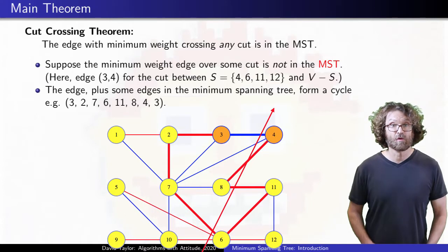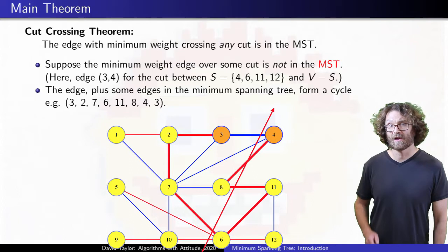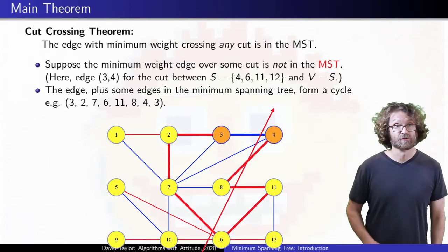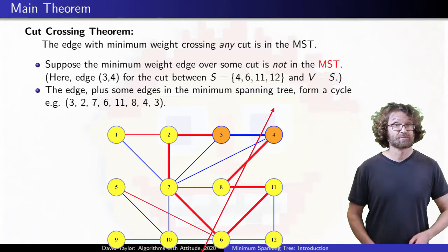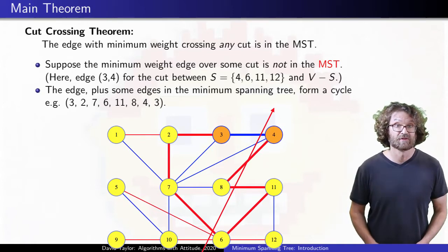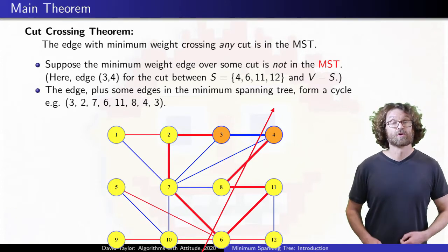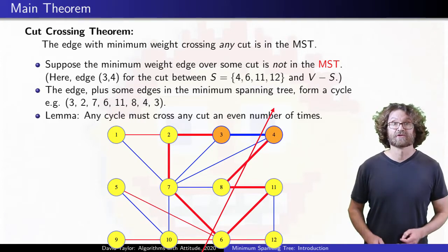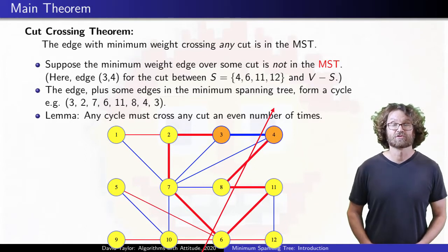Because 3 and 4 were already connected by some path in the tree. But if we follow the tree's path from 3 to 4, it has to cross the cut somewhere, because the path starts on 3's side of the partition, and ends on 4's side of the partition. More generally, any cycle must cross any cut an even number of times, because it ends where it starts.